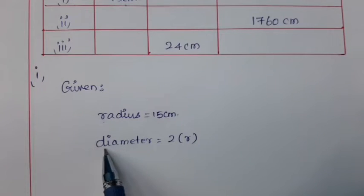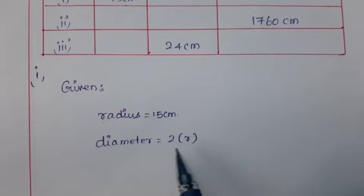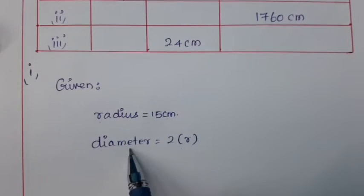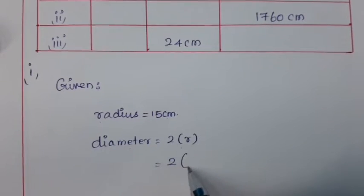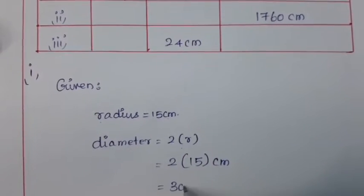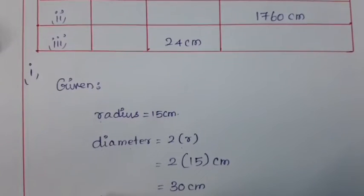We know that the diameter is equal to twice the value of the radius. By using the value of radius in this formula, we can find the value of the diameter — that is 2 into 15 cm, which is equal to 30 cm, which is the required diameter.